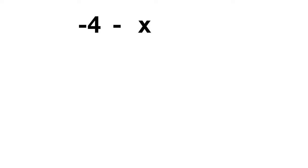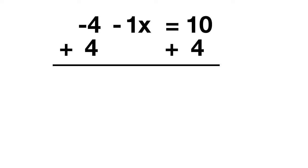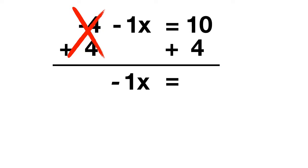Now it's time for you to try some of these problems on your own. Solve the equation negative 4 minus x equals 10. In this equation, you needed to realize that the minus x was really a minus 1x. However, before messing with the x, you needed to get rid of the negative 4. You can do that by adding 4 to both sides. The negative 4 plus 4 cancels out, so all you have is negative 1x. On the other side, 10 plus 4 gives you 14.